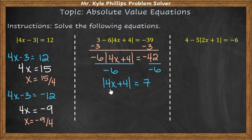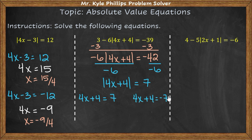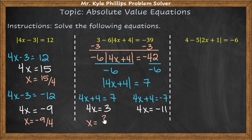Now that the absolute value is isolated, I set 4x plus 4 equal to 7 and also equal to negative 7. Subtracting 4 from both sides: 4x equals 3, and 4x equals negative 11. Dividing both sides by 4 gives x equals 3 over 4, and x equals negative 11 over 4. These are the two solutions that satisfy this equation.